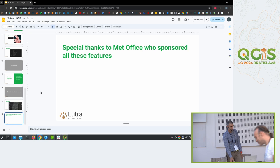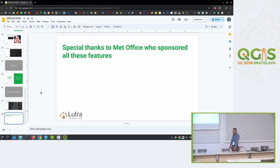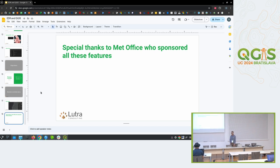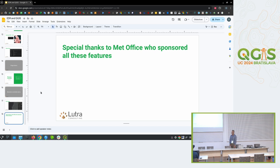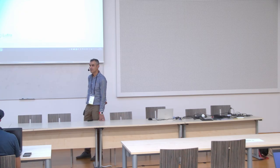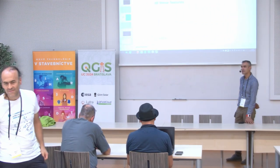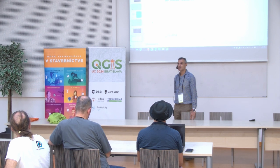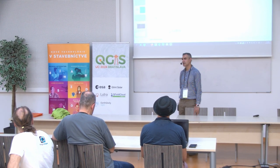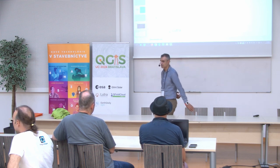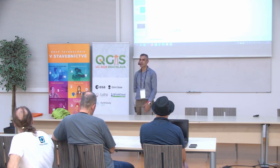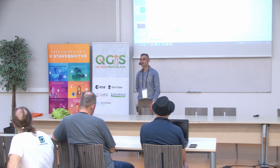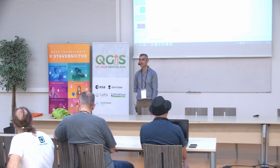Thank you Saber. We have some time for questions. A question from the audience: where do you get the data or find those server connections? I assume Met Office have this available — is it a licensed thing they provide? The one I've been using is a test server. Usually they will advertise it similar to WMTS or other servers — on their website they may publish it, or notify partners that data is being delivered through this server.